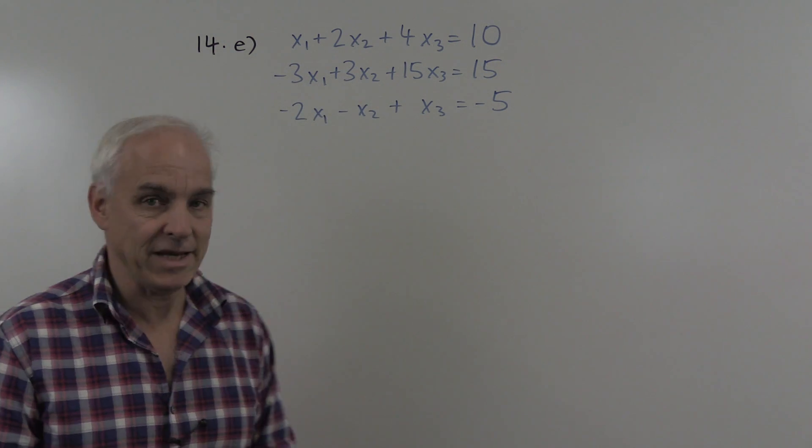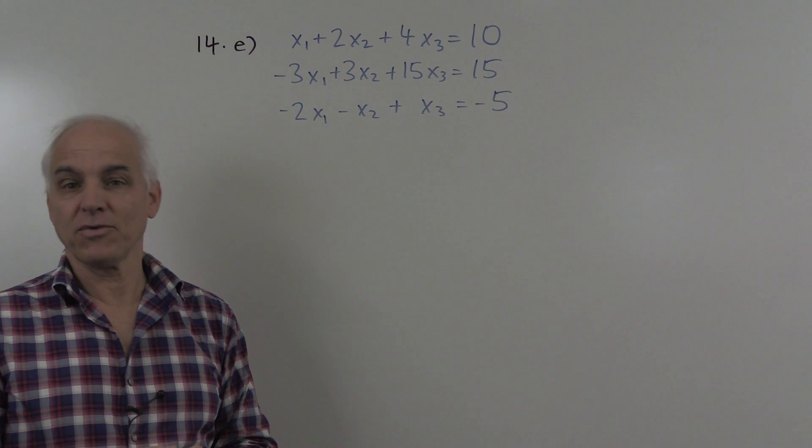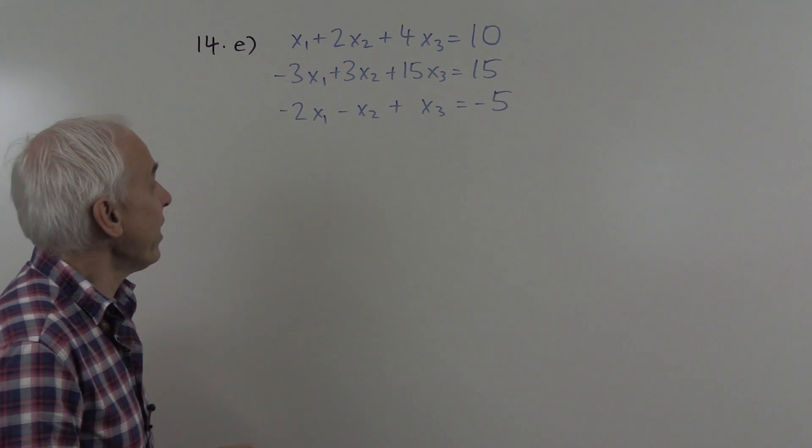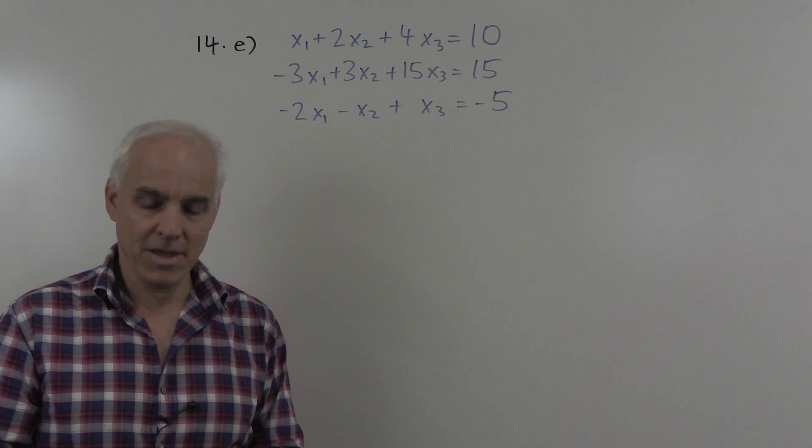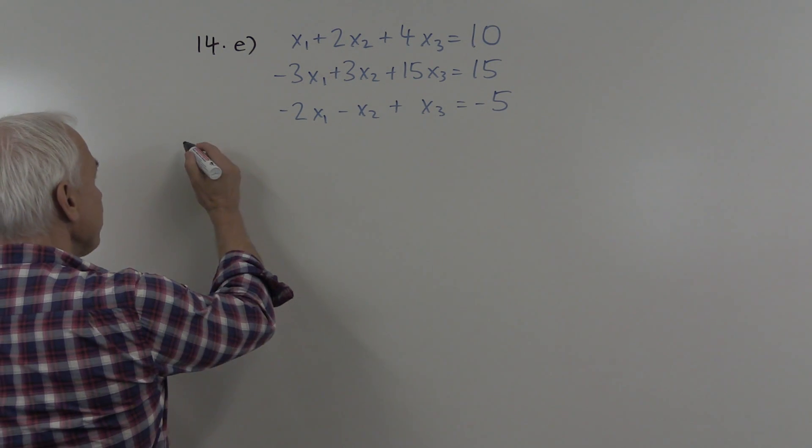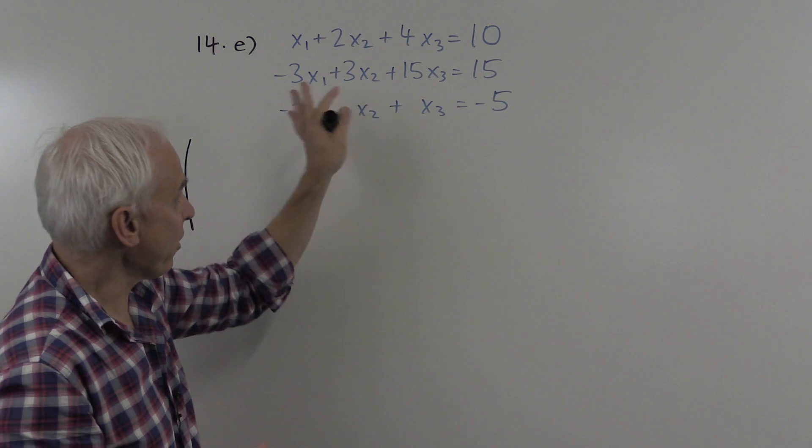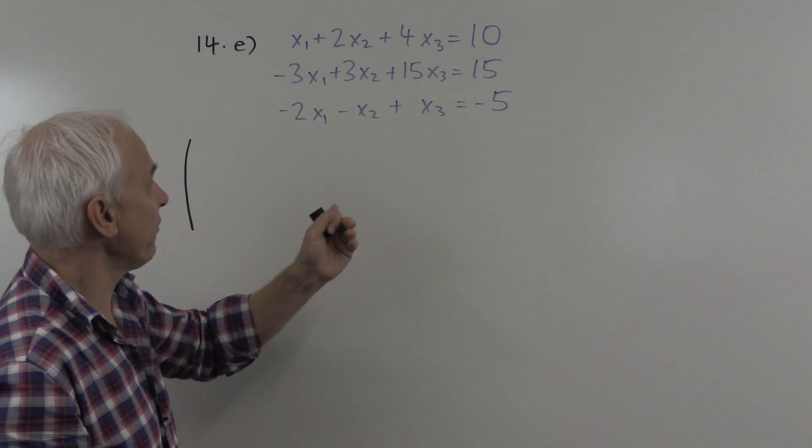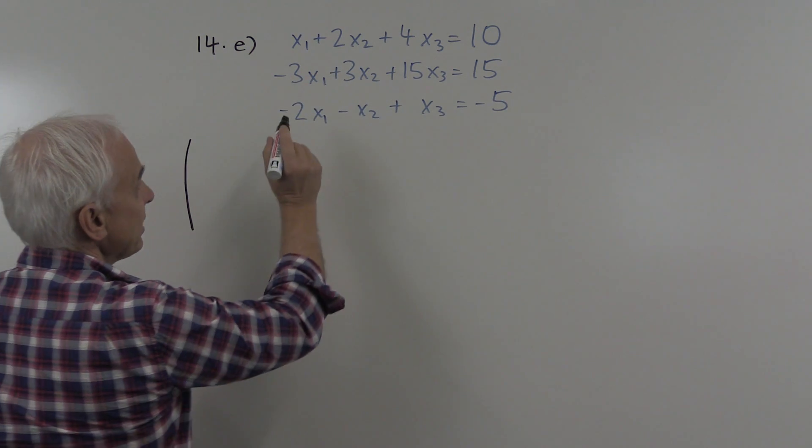So here's problem 14 part E. We have these three equations in three variables x1, x2, x3 and we have to solve the system. The first thing that we have to do is make an augmented matrix. We'll write down the augmented matrix for this system which is a more efficient way of writing down the information where we just encode all the coefficients that are appearing.